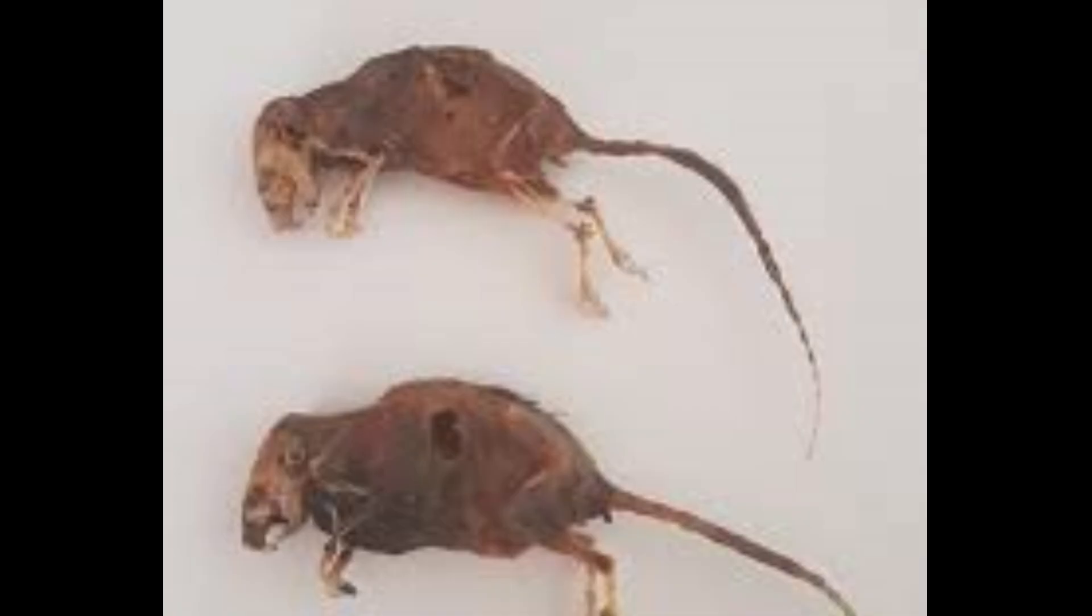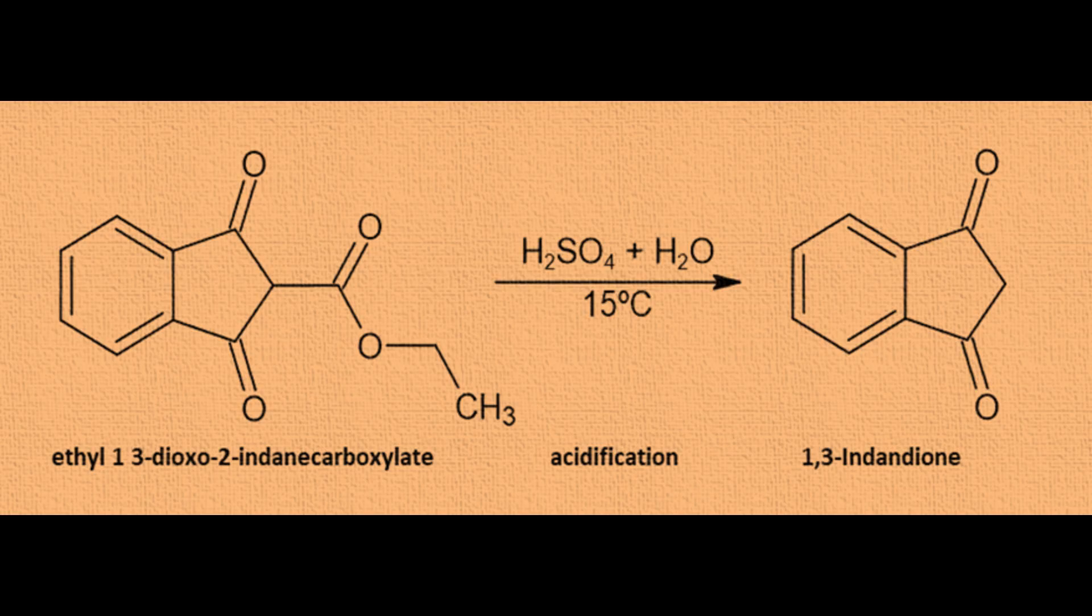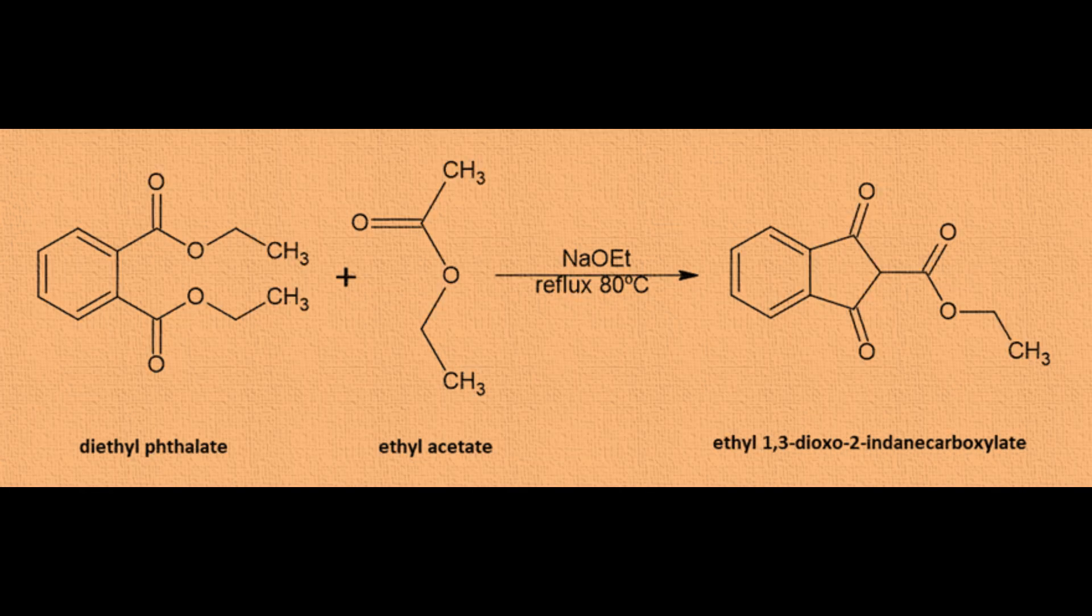These substances are used to poison animals and cause them to bleed to death. 1,3-indandione is obtained by decarboxylation of ethyl-1,3-dioxo-2-indanecarboxylate, which is obtained by glycine condensation with ethyl acetate and diethyl phthalate.